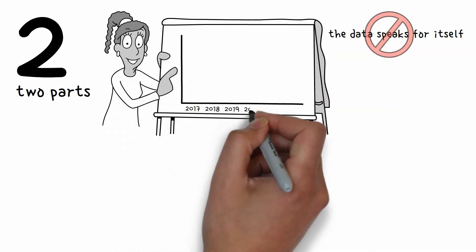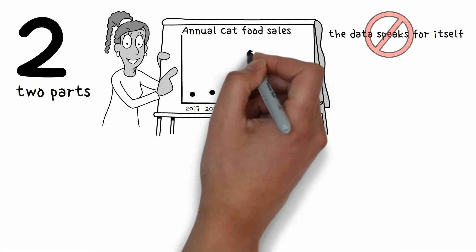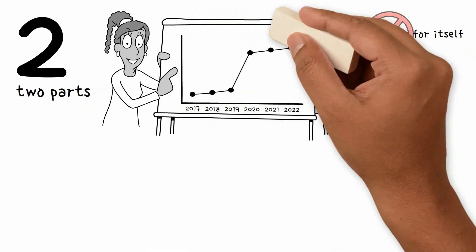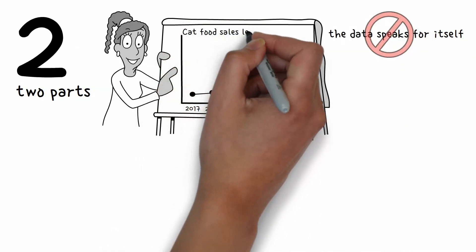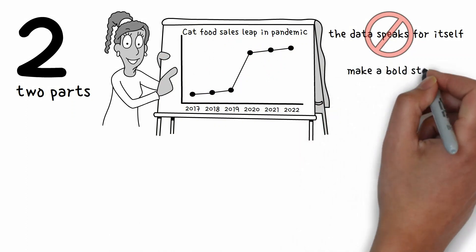For example, rather than a title of annual cat food sales, if the ultimate message that you're trying to convey is that there was a jump of cat food sales during the COVID pandemic, then a better title would be cat food sales leap in pandemic. Don't be afraid to make a bold statement about the data in the title.